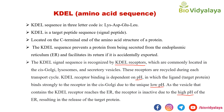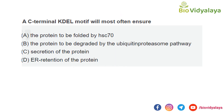I think this video will be helpful for you. Here is one question based on today's class: A C-terminal KDEL motif will most often ensure — Option A, the protein to be folded by HSC70; Option B, the protein to be degraded by the ubiquitin proteasome pathway; Option C, secretion of the protein; Option D, endoplasmic reticulum retention of the protein. Please try to answer this question. At the end of most of our classes I try to ask one question, so please try to answer.